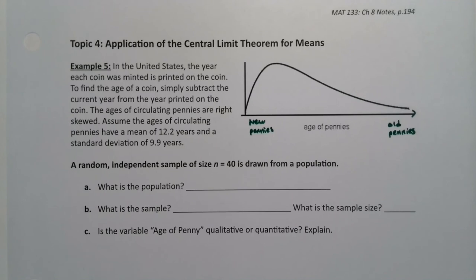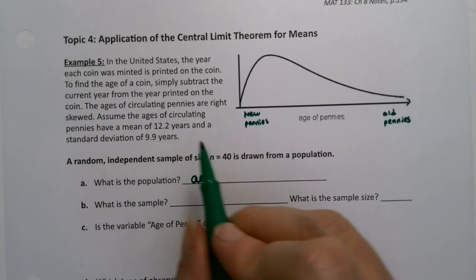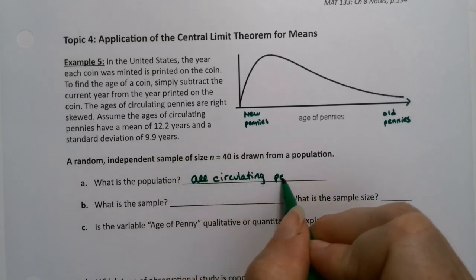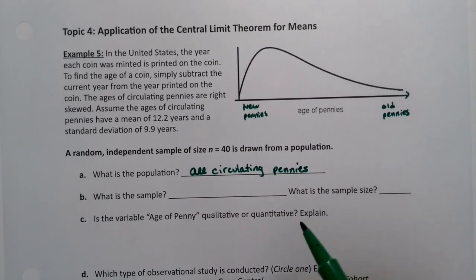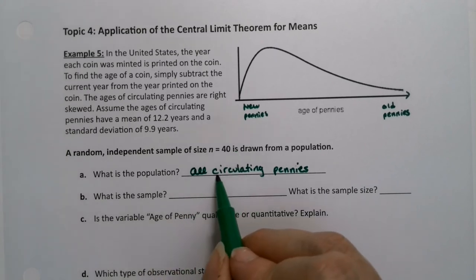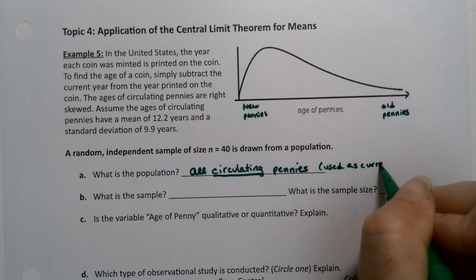So we are going to draw a random independent sample of size n equals 40 from this population. What is the population, first of all? Well, that would be all circulating pennies. Now circulating means they're in use. They're in circulation. People are using them as pennies. They're not being saved and sold at coin fairs or things like that. No convention of coin collectors. These are circulating pennies, used as currency, not as a collectible.